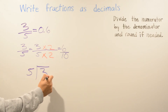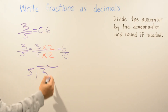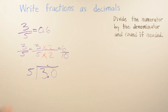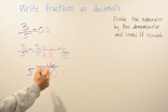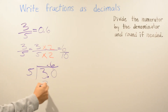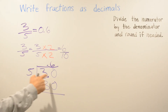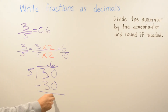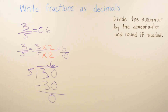We place a decimal point and add a zero, making it thirty. Five goes into thirty six times. Five times six is thirty, and thirty minus thirty is zero. So we get 0.6 — the same answer as when we used the multiplication method.